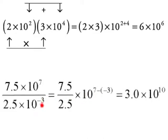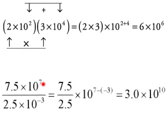When we bring the bottom exponent up — which is what you need to do when you're dividing — you change the sign. If you move it up or down, the sign changes. So when I bring this 10 to the negative 3rd up, it becomes 10 to the positive 3rd, and we have 7 plus 3, which is 10 to the 10th.